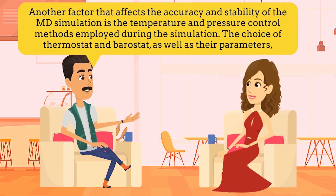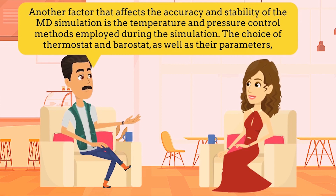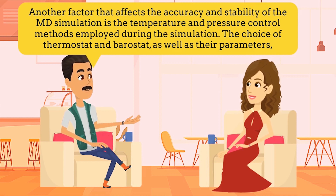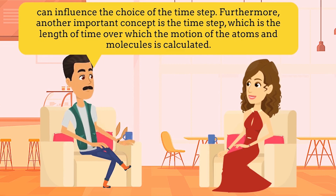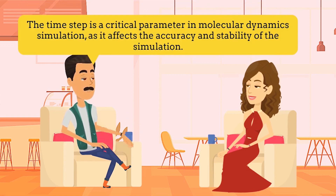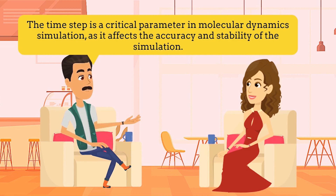Another factor that affects the accuracy and stability of the MD simulation is the temperature and pressure control methods employed during the simulation. The choice of thermostat and barostat, as well as their parameters, can influence the choice of the time step. Furthermore, another important concept is the time step, which is the length of time over which the motion of atoms and molecules is calculated. The time step is a critical parameter in molecular dynamics simulation, as it affects the accuracy and stability of the simulation.